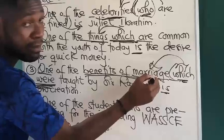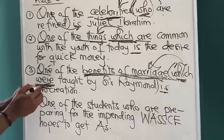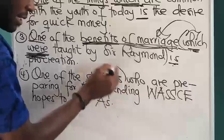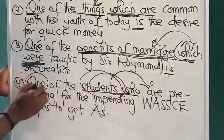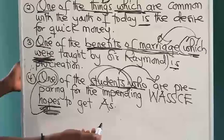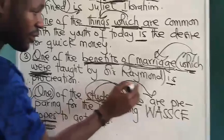'Benefits of marriage' — not just 'marriage'. Benefits of marriage is relating to 'were', which is plural. So 'benefits were', while 'one is'. Then 'one of the students who are' — 'students' is plural and 'who' agrees with it, so 'are'. We have 'one', which is agreeing with the verb 'hopes' — a verb with S, singular. So 'one hopes to get', while the antecedent 'who' is agreeing with 'students', therefore 'are'.